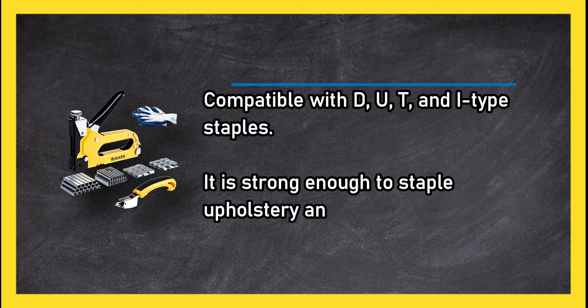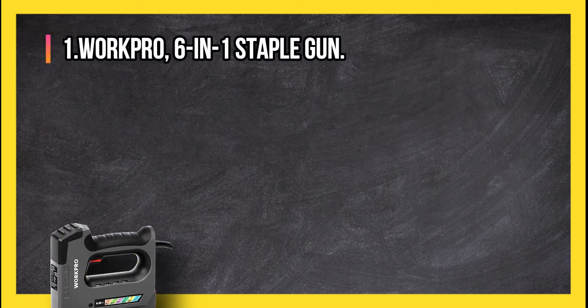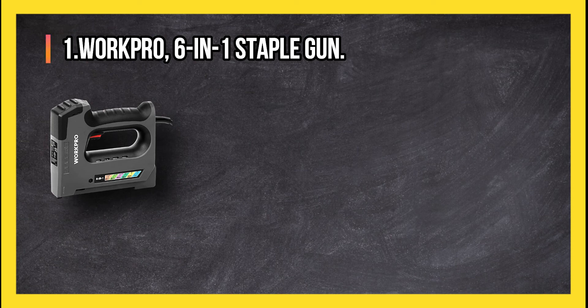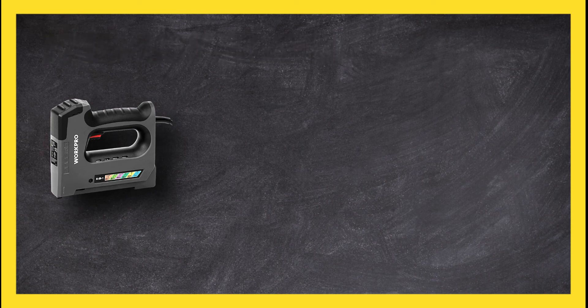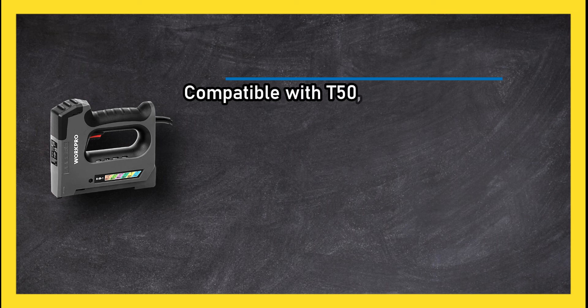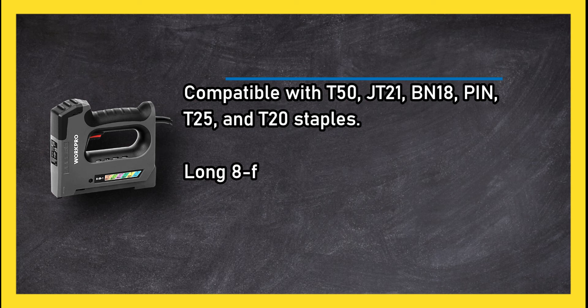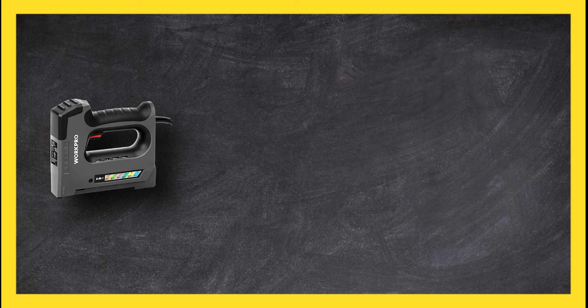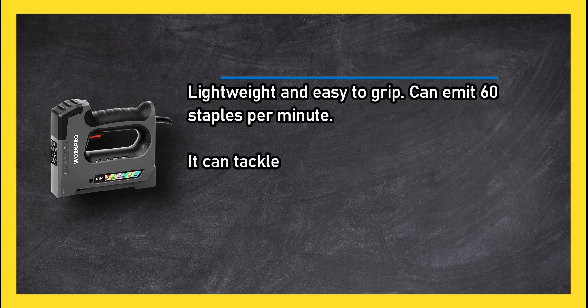At number 1: WorkPro 6-in-1 Staple Gun, compatible with T50, JT21, BN18 pin, T25, and T20 staples. Long 8-foot cord gives users plenty of space. Lightweight and easy to grip, can emit 60 staples per minute. It can tackle any home improvement project that comes your way. Although powerful, the cord may be limiting for some users.